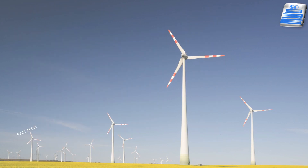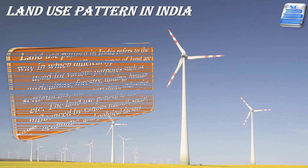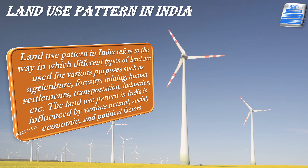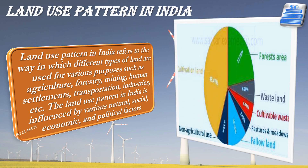The land use pattern in India is determined by physical factors such as topography, climate and soil types, as well as human factors such as population density, technological capability, and culture and traditions.